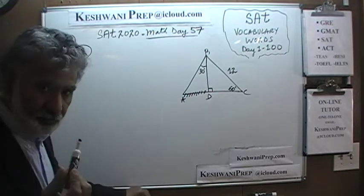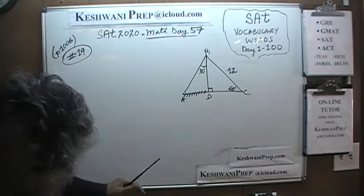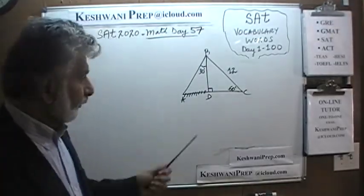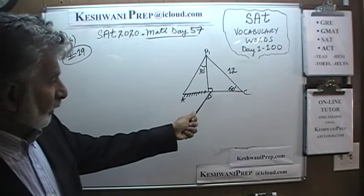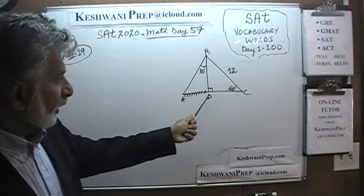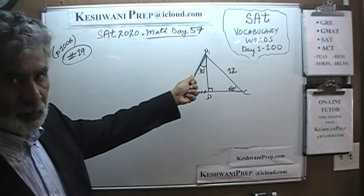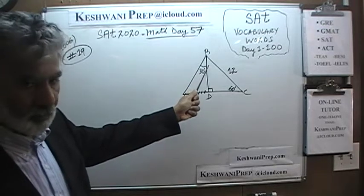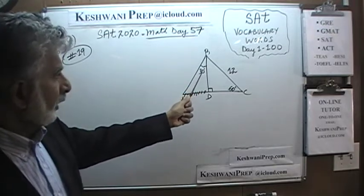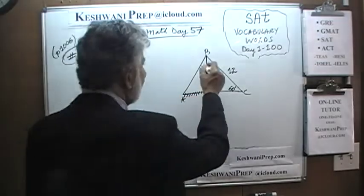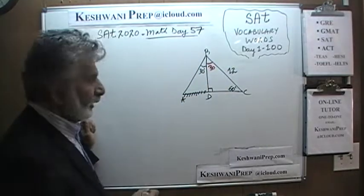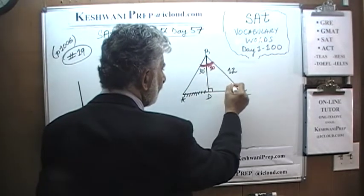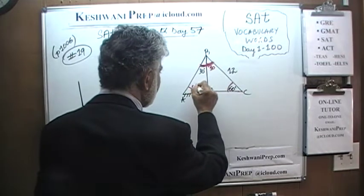The first method: I am going to use a different color so we can distinguish between what was given and what we are adding. Because this is 90 degrees, it is dropping a perpendicular, which means angle B is being cut into two equal halves. We are told this angle is 30, which means this angle must also be 30. If both halves are 30, the entire angle B is 60 degrees.